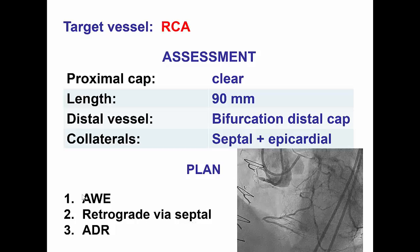The initial plan was to perform antegrade wire escalation, retrograde via septals if antegrade failed, followed by antegrade dissection and reentry. The reason we wanted to avoid antegrade dissection and reentry was because of the bifurcation on the distal cap.